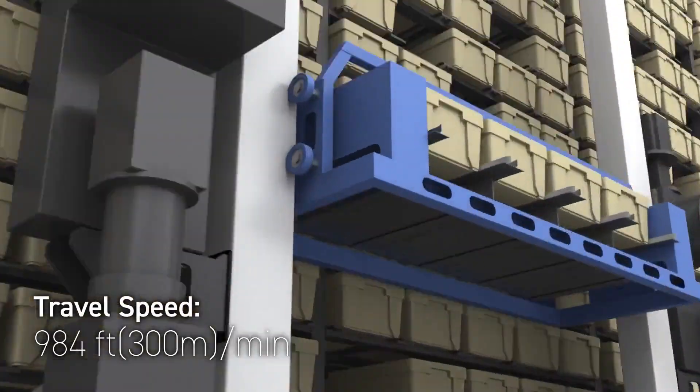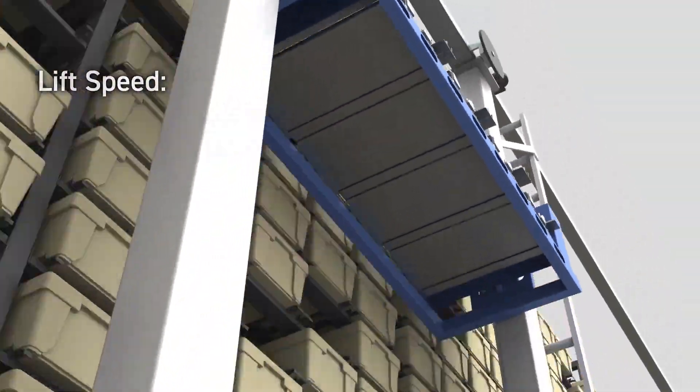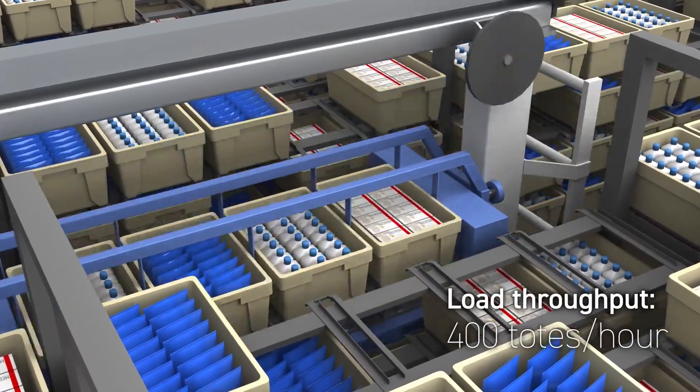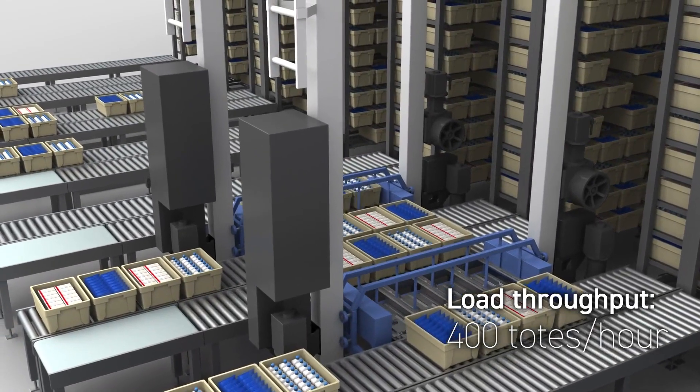Stacker cranes travel at 984 feet per minute, lift at 360 feet per minute, and move up to 400 totes per hour, delivering twice the throughput of a conventional MiniLoad ASRS.